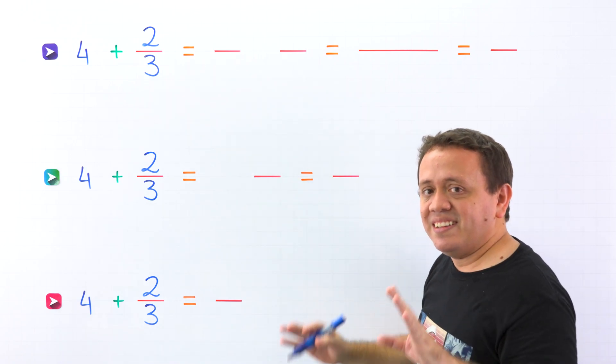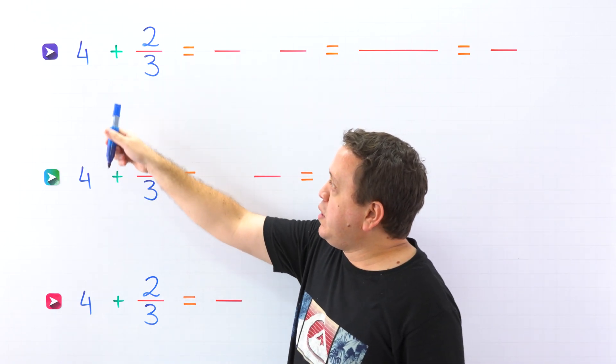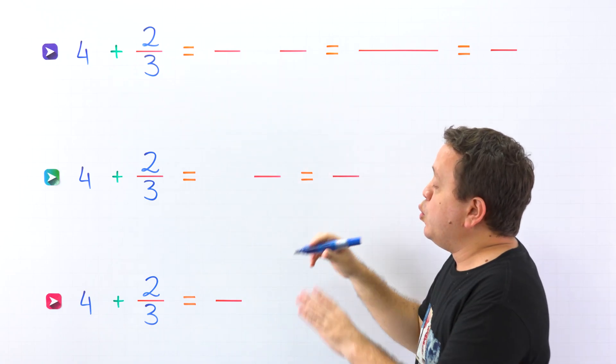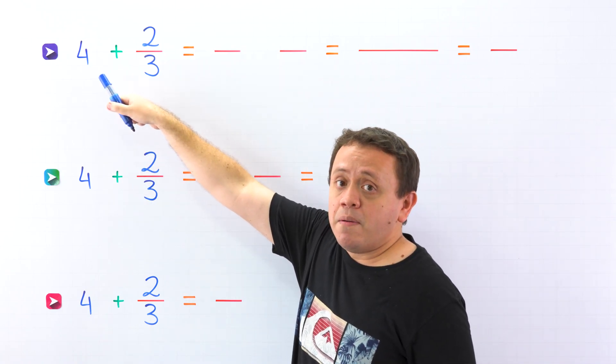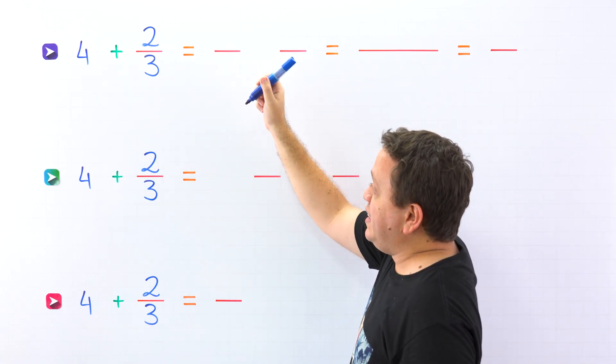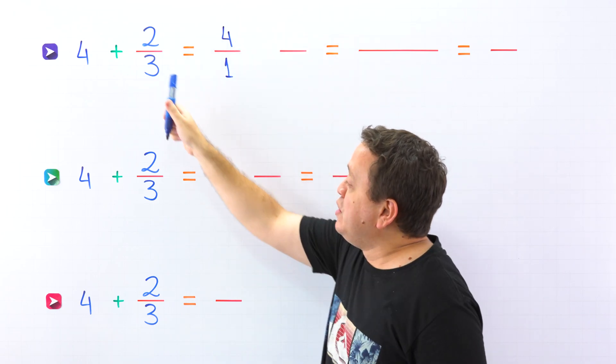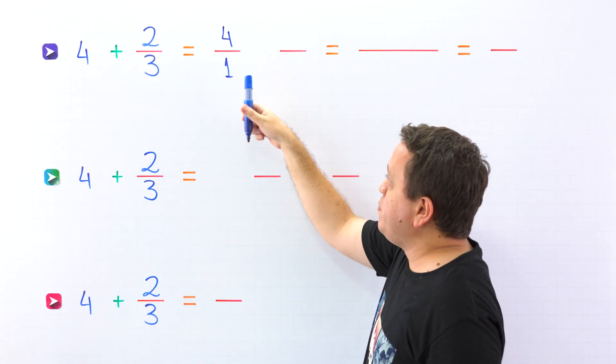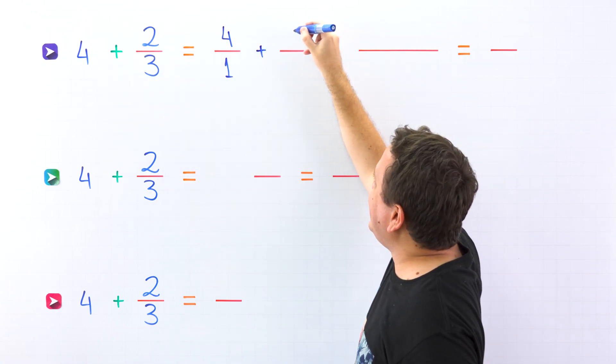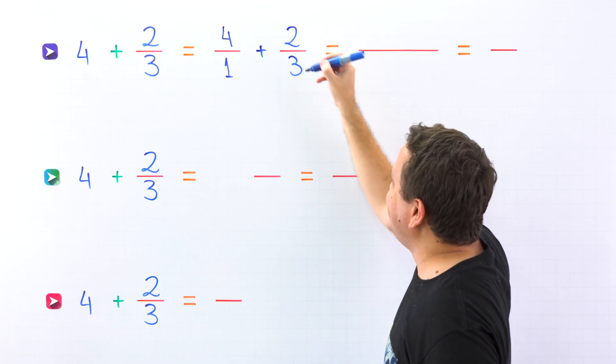Let's start with the first method. This is a classical method, and we're going to add 4 plus 2 thirds. We'll start by converting the whole number to a fraction, and the easiest way to convert a whole number to a fraction is by putting 1 as a denominator, so 4 becomes 4 over 1. Then we have plus 2 thirds.